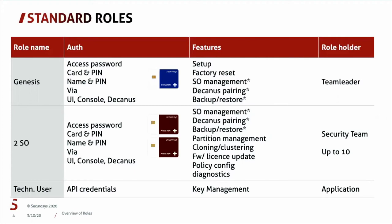During the initial visit, the first step is to create the security officers, which is the second role. There are always two people who need to be together to ensure a four-eyes principle, and we advise to onboard the complete security team. You can onboard up to 10 security officers so you ensure that you always have two available.